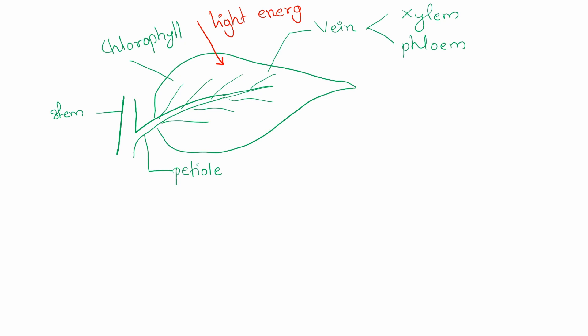The leaf is a broad, expanded structure. These expanded leaves have openings — stomata — which allow gas exchange from the atmosphere into the leaf.